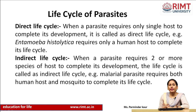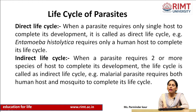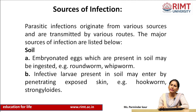The life cycle of parasites has two types: direct and indirect. In the direct life cycle, a parasite requires only a single host to complete its development. Example: Entamoeba histolytica requires only human beings to complete its life cycle. In the indirect life cycle, the parasite requires two or more species of host to complete its development. Example: the malaria parasite requires both human beings and the mosquito to complete its life cycle.